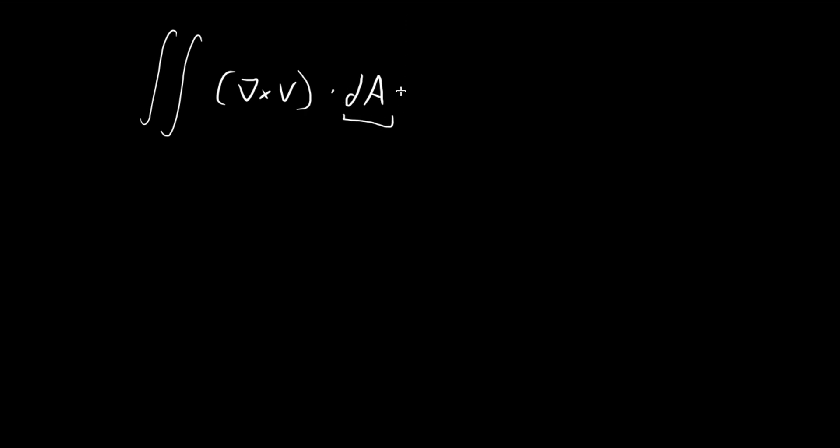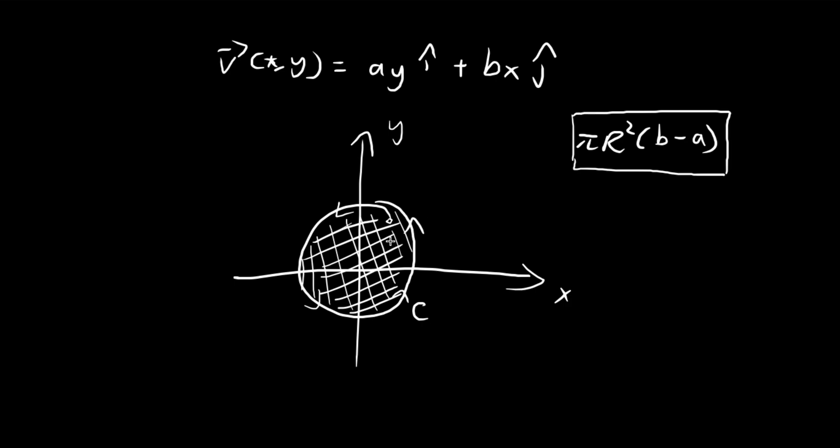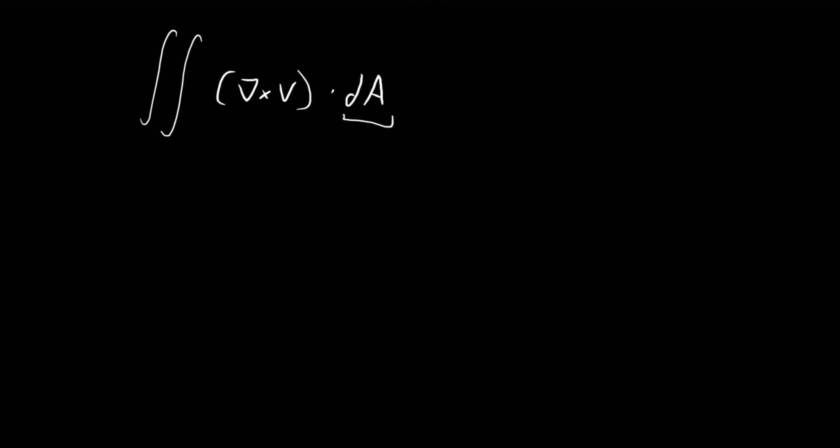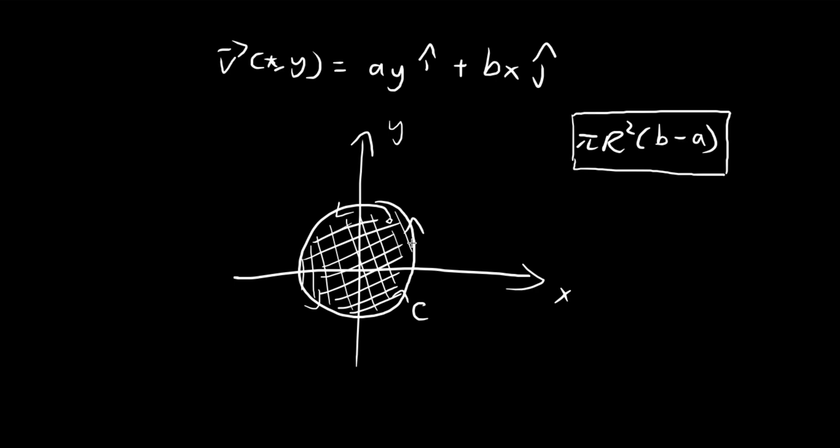So first of all, dA, don't forget that this is actually a vector. It will have a magnitude that is equal to a tiny piece of the surface. And then it will be pointing in a direction that is perpendicular to the surface. And the direction will be decided by the right-hand rule.